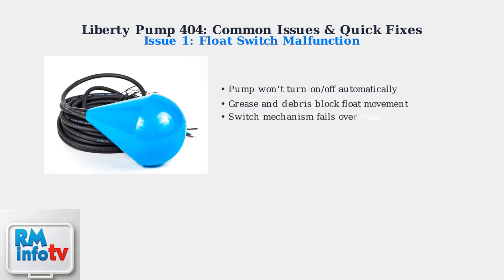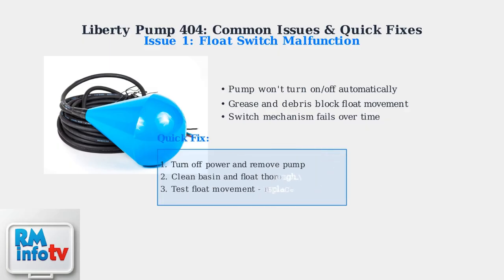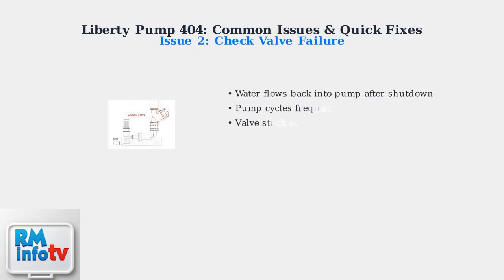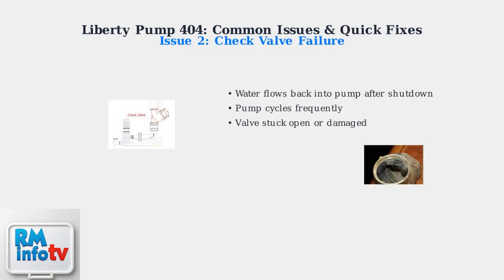When grease, debris, or sludge accumulates in the basin, it prevents the float from moving freely. This causes the pump to either run continuously or fail to activate when needed. The solution is straightforward: turn off power, remove the pump, and thoroughly clean both the basin and float switch. Test the float movement manually — if it's still sticky or damaged, replacement is necessary.